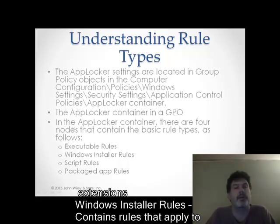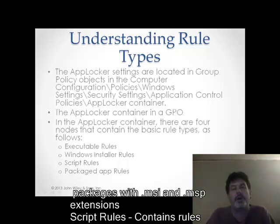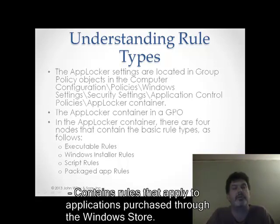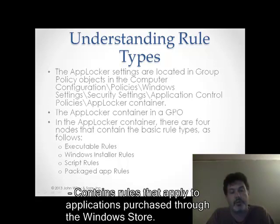The four node types are: executable rules — rules that pertain to specific executable files; Windows installer rules — rules that include any installer packages with the .msi or .msp extension; script rules — these rules apply to any scripts that want to run on your workstations, such as batch files with a .bat extension or JavaScript files; and packaged app rules — these rules apply to the modern apps that you can buy in the Windows Store.